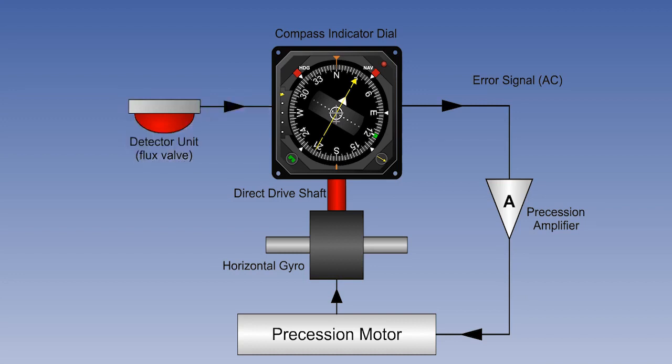However, there is also a smoothing of the signal the other way, because the magnetic flux valve signal itself is subject to short-term fluctuations, and the effect of these is reduced by the gyro. Let's see how.